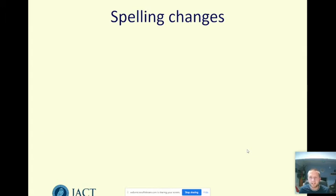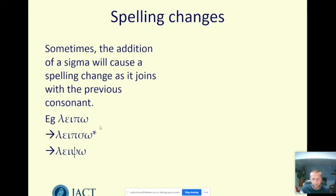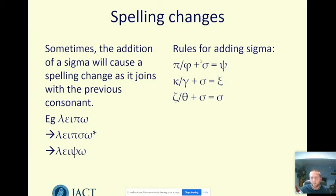There is one possible complication: occasionally that sigma joins with the consonant in front of it to give a spelling change. For example, the verb leipo — I leave — in the future tense, pi and sigma together give a form that already exists as one letter, psi. So leipo becomes leipso; no Greek would ever write pi-sigma when psi is an option. This also happens with phi plus sigma, which gives psi; gamma or kappa followed by sigma also gives psi. Theta and most of the time zeta followed by a sigma leave us with just a sigma, because the s is the dominant sound that remains.